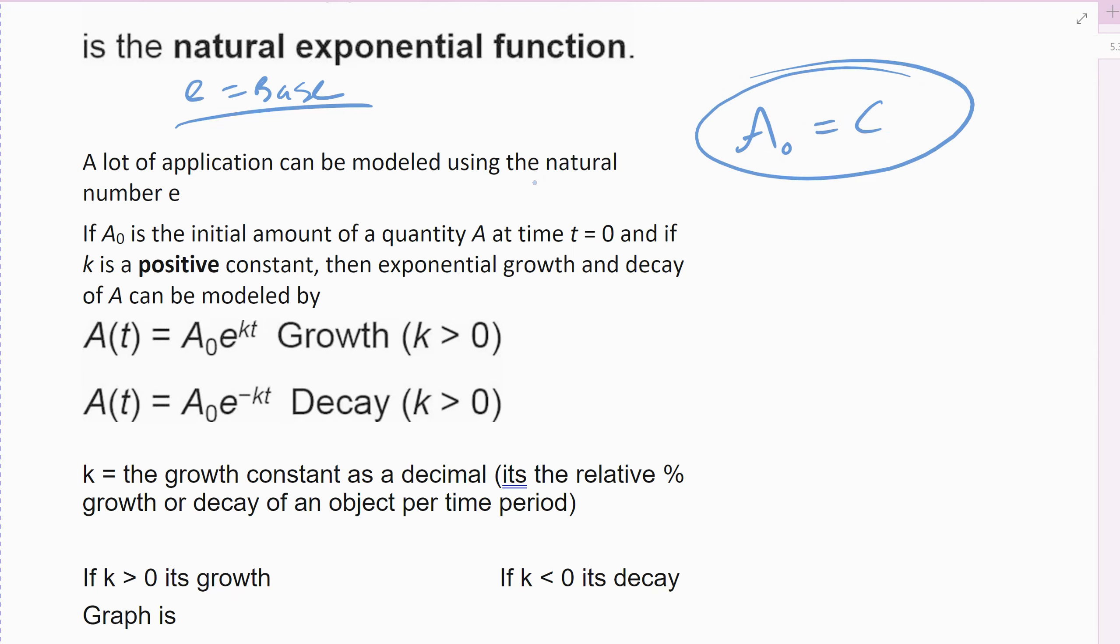Then there's this k. K is up in my x—if you look here, there's the k times t. K is a constant and it's considered the exponential growth or exponential decay constant, and it has to do with how fast or slow my model's growing or decaying as a percent of its size.